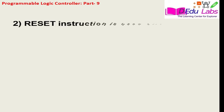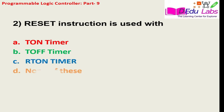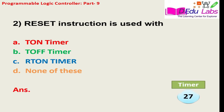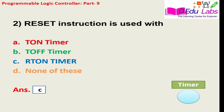Question number two: the reset instruction is used with option A: TON timer, option B: TOFF timer, option C: retentive TON (RTON) timer, option D: none of these. The answer is option number C, retentive TON timer, that is RTON timer.